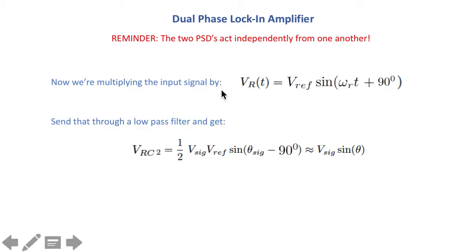So we multiply the input signal times that second phase sensitive reference signal. Then we send that through a low-pass filter to be able to get the output of the second phase sensitive detector which is roughly equal to the amplitude times sine of the phase difference.